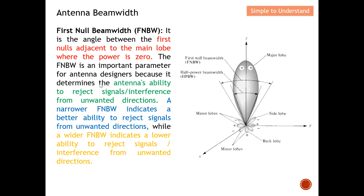The First Null Beam Width determines whether the antenna can reject signals or interference from unwanted directions. A narrow FNBW indicates a better ability to reject signals from unwanted directions — the energy is very concentrated and the antenna is highly directive. A wider FNBW indicates a lower ability to reject interference from unwanted directions.